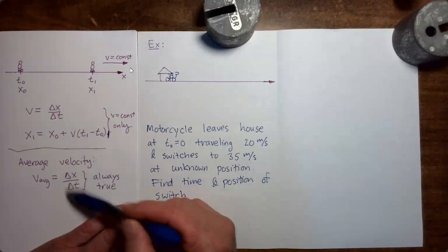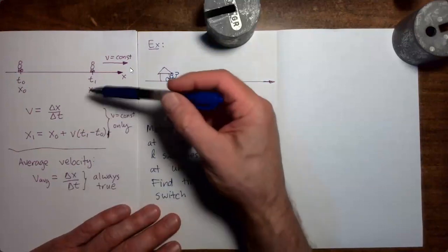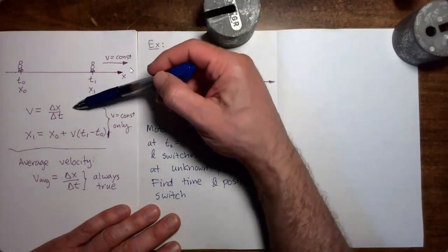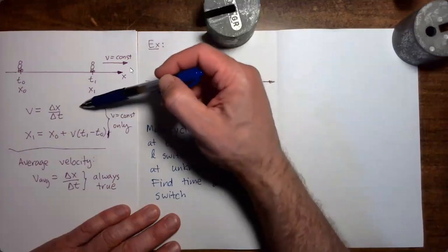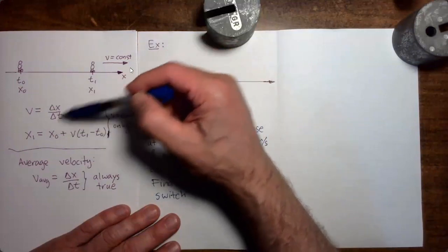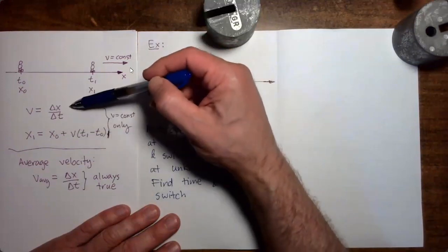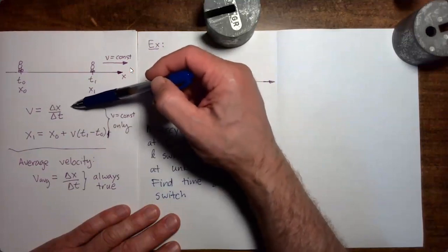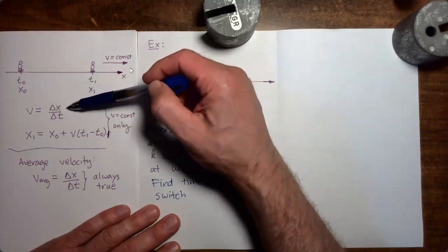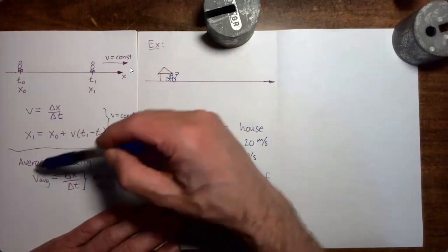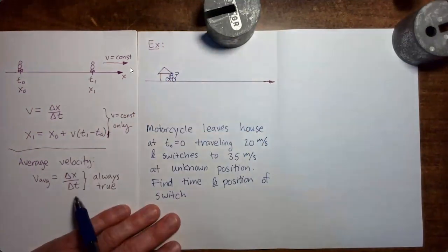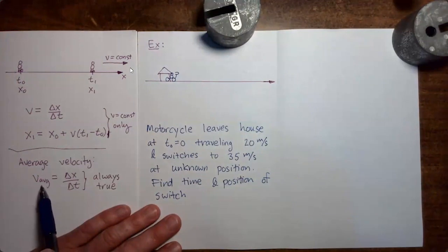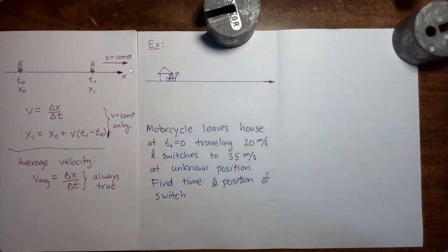Now this equation down here might look like the equation up here, but here's the difference. The equation up here gives you the actual velocity, but only in instances where the velocity is constant. The equation down here is always true, but it doesn't give you the actual velocity — it only gives you the average velocity over some process.